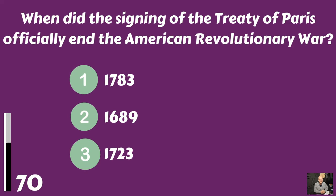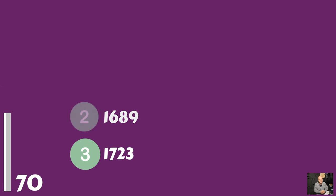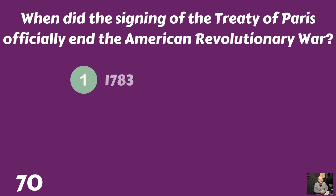When did the signing of the Treaty of Paris officially end the American Revolutionary War? Was it 1783, 1689, or 1723? That was the year 1783.